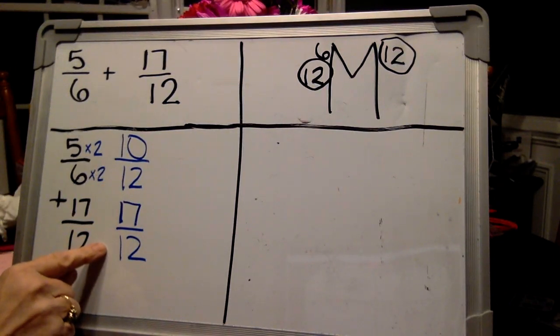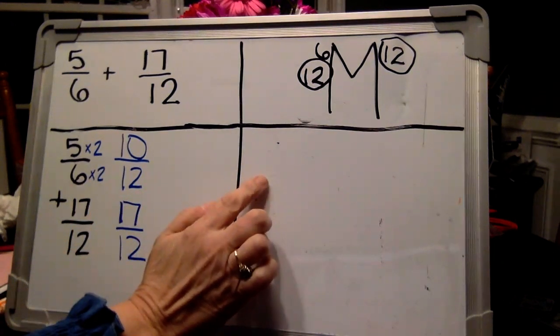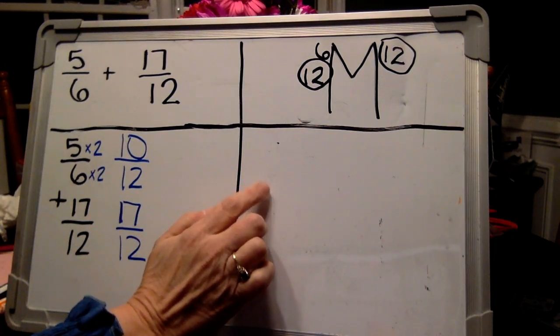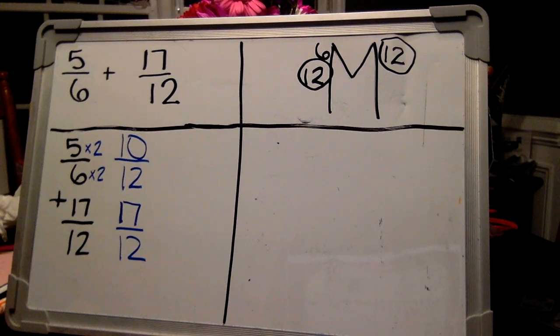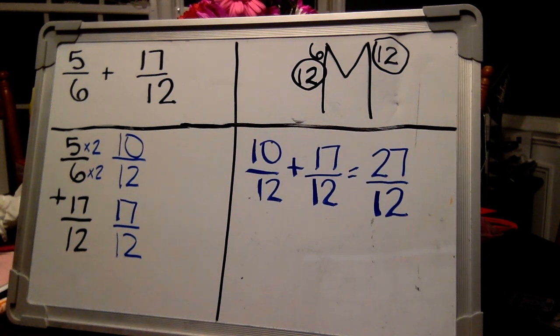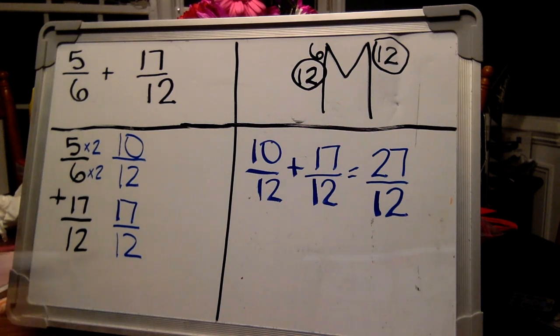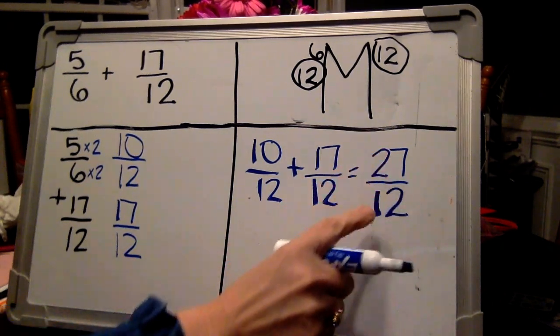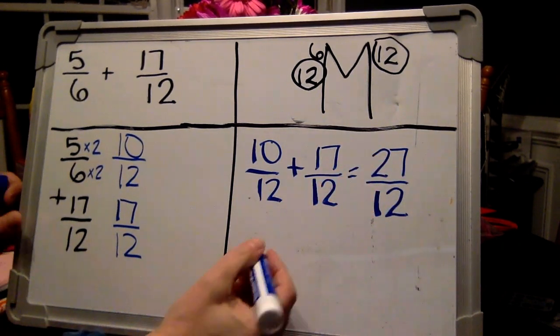I'm going to pause the video and you go ahead and recopy them over here. And I want you to try to see if you can simplify them after you add them. Add them first. Oh my goodness, did you get 27 twelfths like me? That's not only an improper fraction, but we also need to simplify it. Let's try and see if we can simplify it before we turn it into a mixed number.